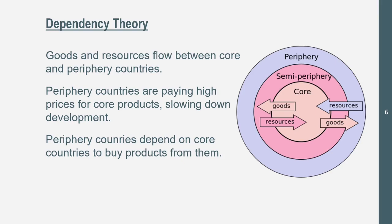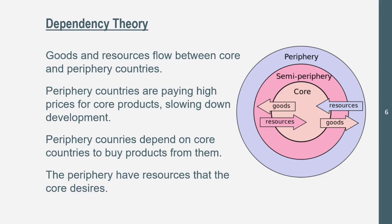They all depend on each other and are interdependent. If periphery countries stop selling resources, core countries will have problems, which will in turn affect periphery countries. The periphery have resources that the core desires — look at the Middle East, which has enormous amounts of oil. Western Europe, with mostly core countries, doesn't have comparable oil reserves. That's why core countries buy from periphery countries.